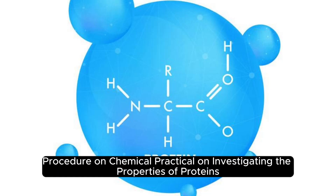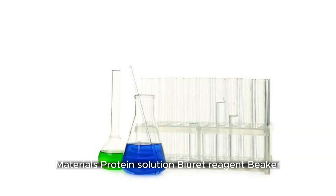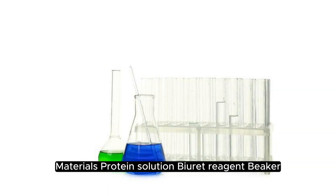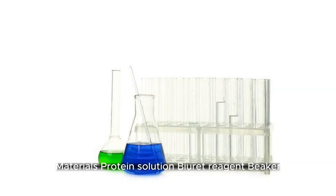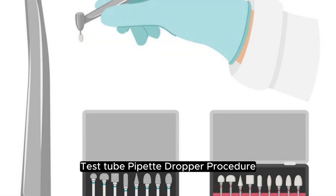Procedure on Chemical Practical on Investigating the Properties of Proteins. Materials: Protein Solution, Biuret Reagent, Beaker, Test Tube, Pipette, Dropper.